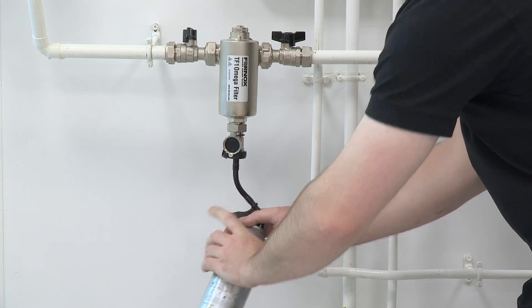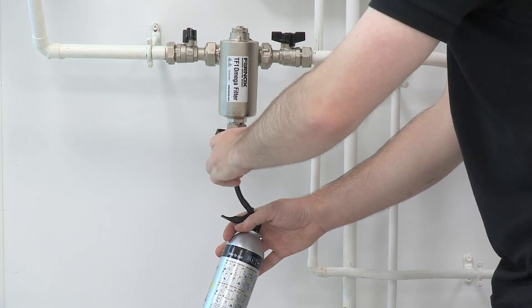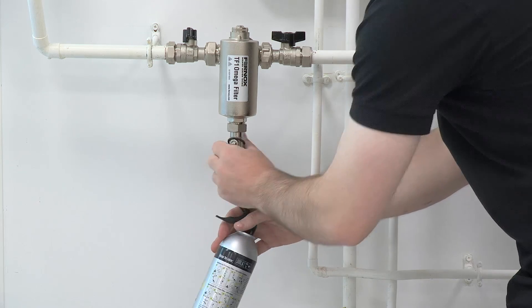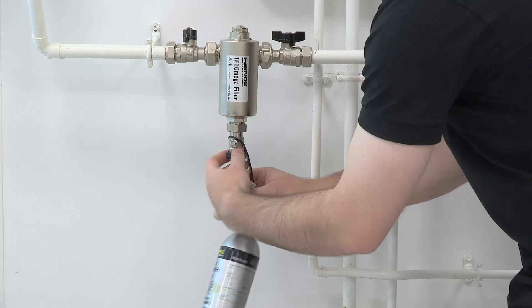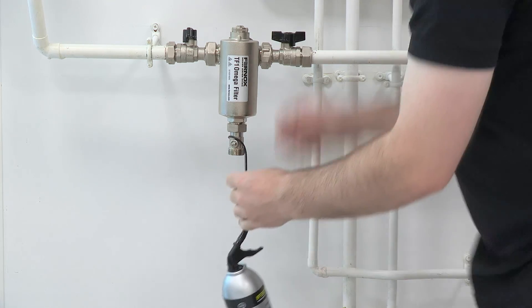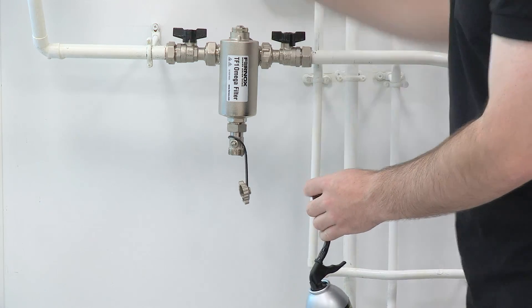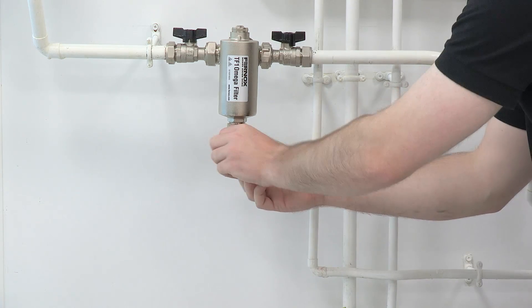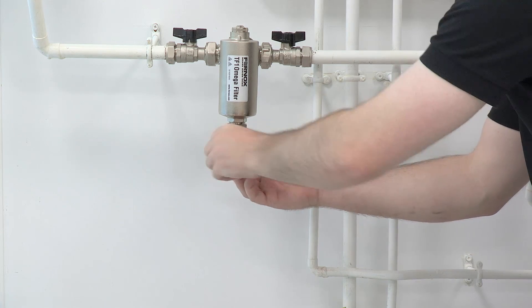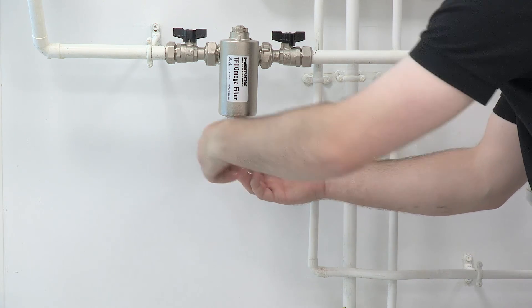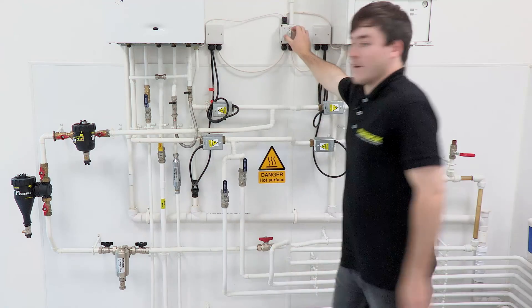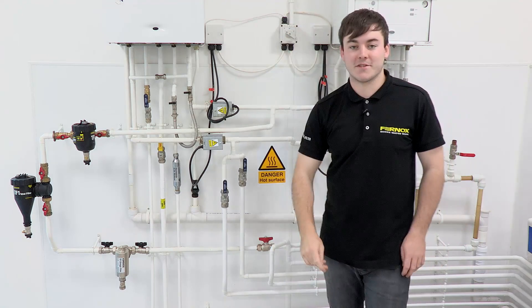Close the drain valve and unscrew the adapter from the TF1 filter. Open the outlet valve and replace the drain valve cap. Then switch the boiler back on and it's as simple as that.